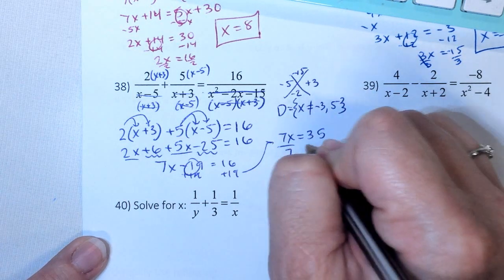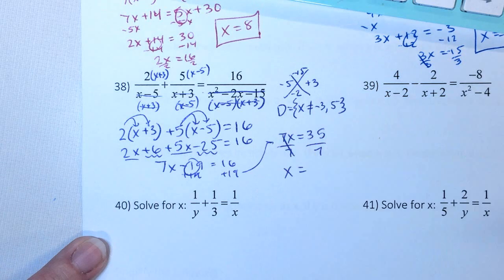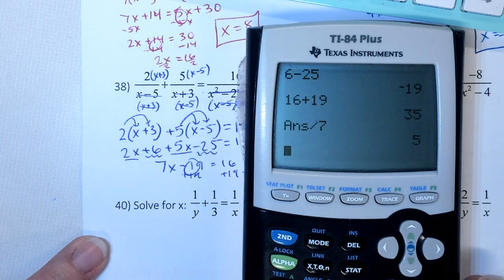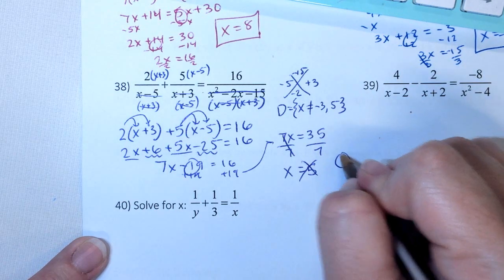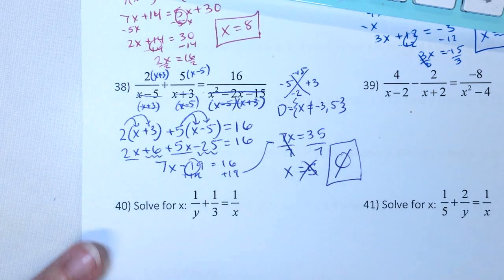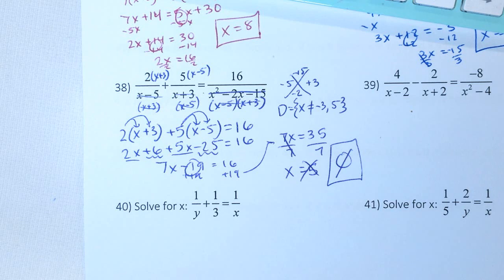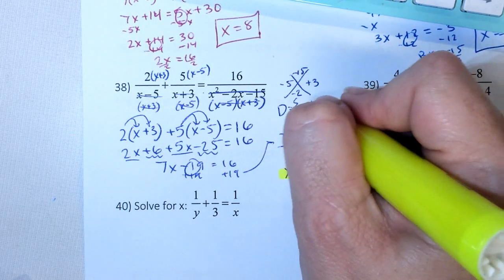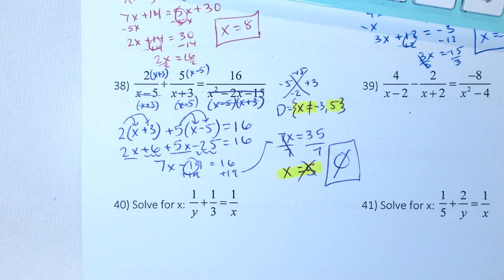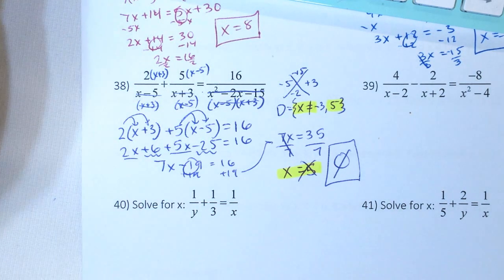Divide by 7, divide by 7, x equals, I believe that's 5. Well, didn't I say x cannot equal 5? So the answer is no solution. Because we got x equals 5, but x cannot equal 5.